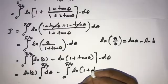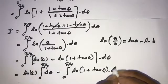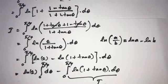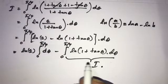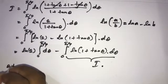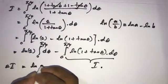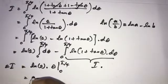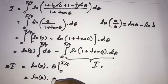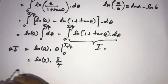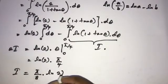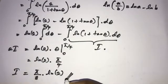That last integral is equal to I. Moving it to the left-hand side, 2I equals natural log of 2 times [θ] from zero to π/4, which gives natural log of 2 times π/4. Therefore I equals π/8 · natural log of 2. This is the answer. If you like this video, please subscribe to this channel. Thank you for watching.